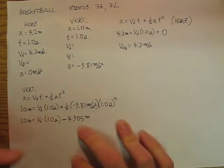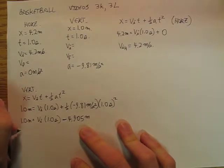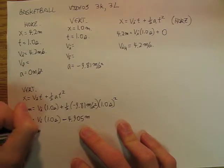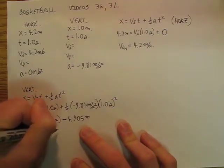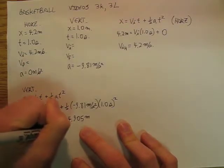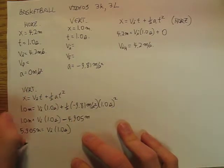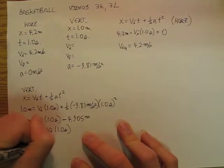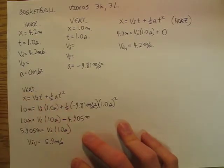So we have 5.905 meters equals v_i 1.0 seconds. And so v_i vertical is going to be 5.90 meters per second.